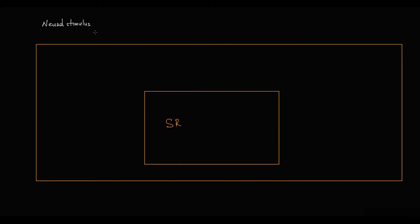So, how does this affect the contractility of myocardial tissue? First, briefly about normal physiology. When a neural stimulus reaches the sarcolemma of cardiomyocytes, it causes depolarization of the cell membrane by activation of voltage-gated sodium channels, and sodium flows into the cell by concentration gradient. This sodium will be exported out of the cell by sodium-potassium ATPase.